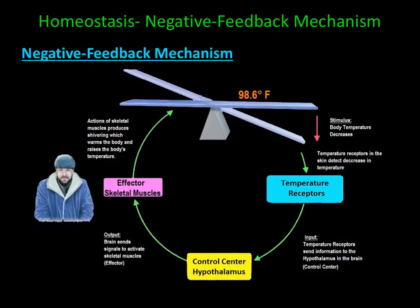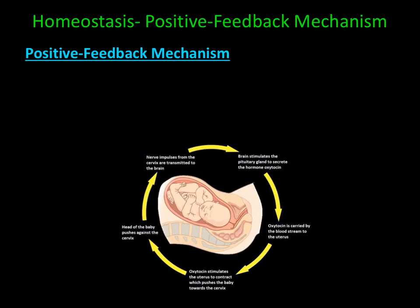Let's take a look at what happens when the body gets cold. When body temperature decreases, temperature receptors in the skin detect the decrease in temperature. These receptors send information to the hypothalamus in the brain. The brain then sends signals to activate skeletal muscles. The actions of the skeletal muscles produce shivering, which warms the body and raises the body's temperature. Shivering opposes the initial decrease in body temperature.